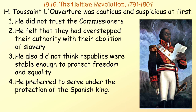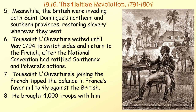Toussaint Louverture was cautious and suspicious at first — he did not trust the commissioners, felt they had overstepped their authority, and did not think republics were stable enough to protect freedom and equality, preferring to serve under the protection of the Spanish king. But the British were invading both Saint-Domingue's northern and southern provinces and restoring slavery wherever they went. Toussaint waited until May 1794 to switch sides and return to the French after the National Convention ratified the abolition. His joining the French tipped the military balance against the British — he brought 4,000 troops with him.